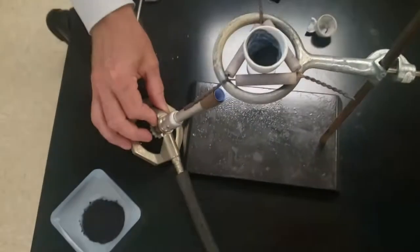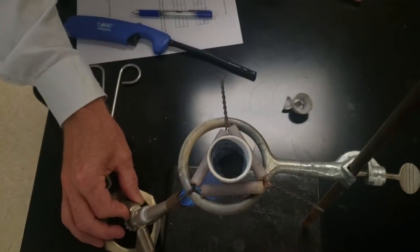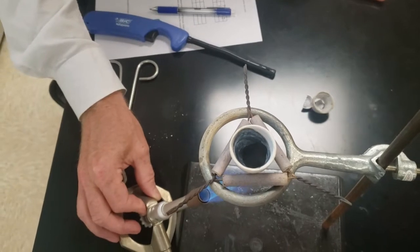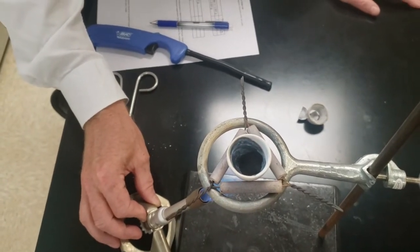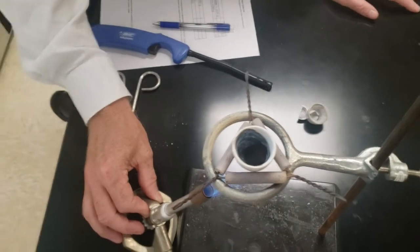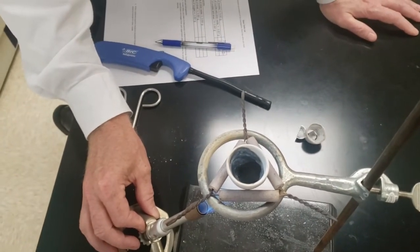But again, first rule of the lab: no freaking out. So as we heat this slowly, don't forget that heat goes up. You have a column of heat going straight up.